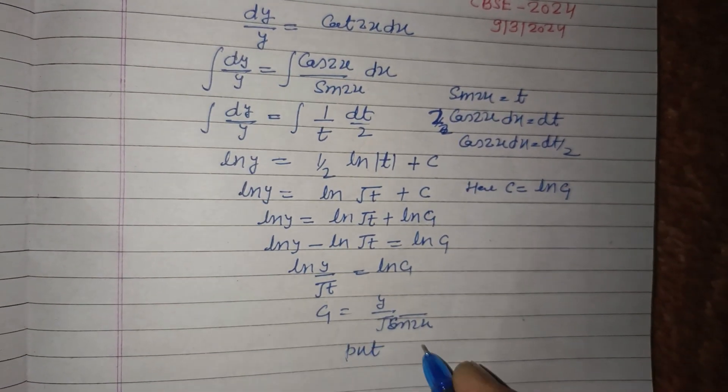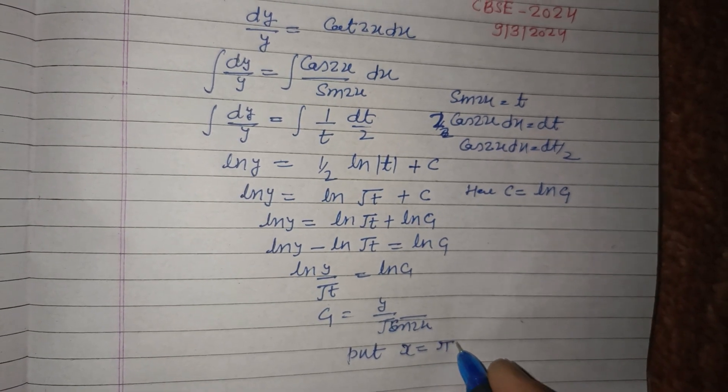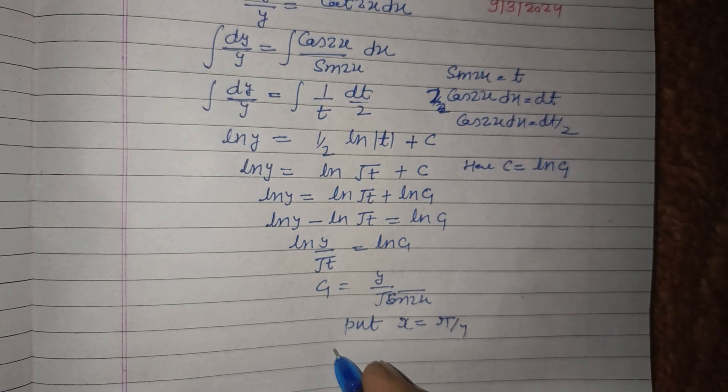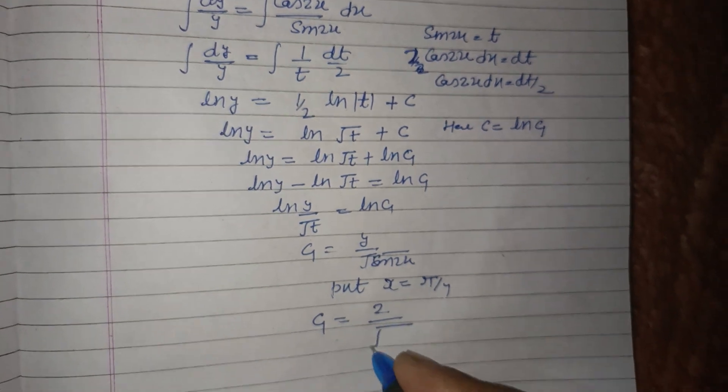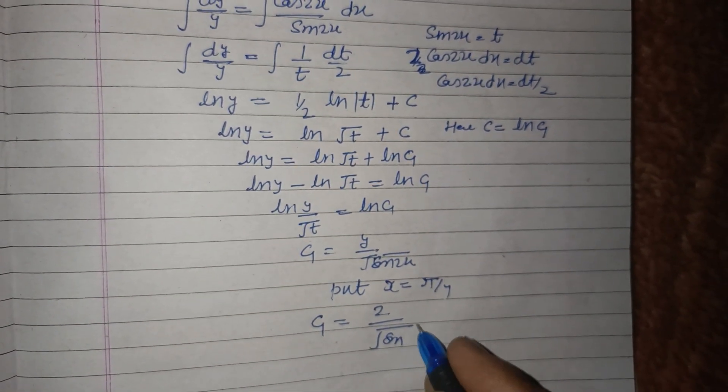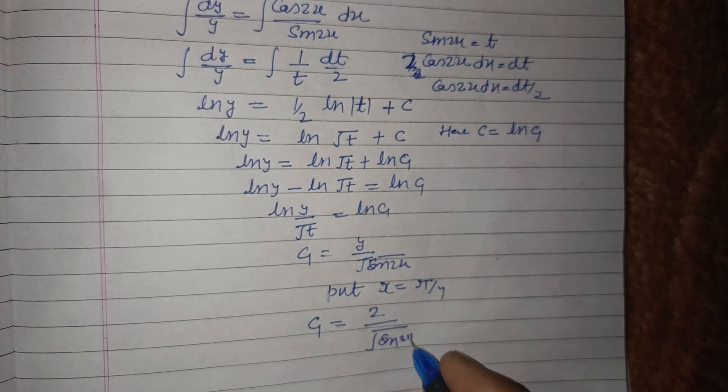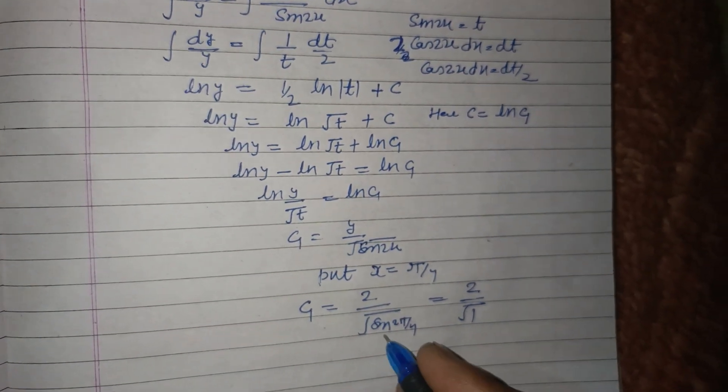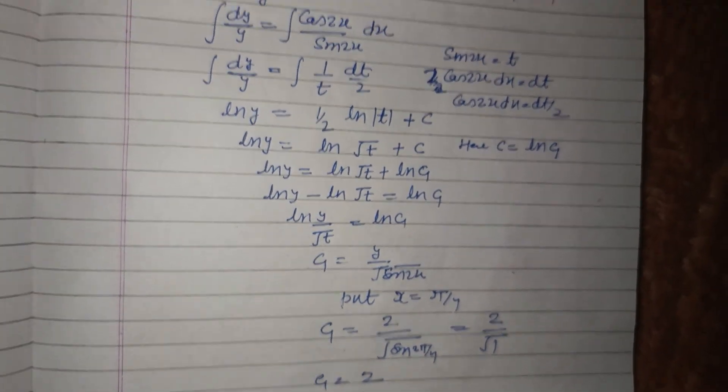When x is equal to π/4 and y is 2, we have c1 equal to y upon root sin 2x, which gives c1 equal to 2 upon root sin(2π/4) equal to 2 upon root sin(π/2) equal to 2 upon 1. So c1 is equal to 2.